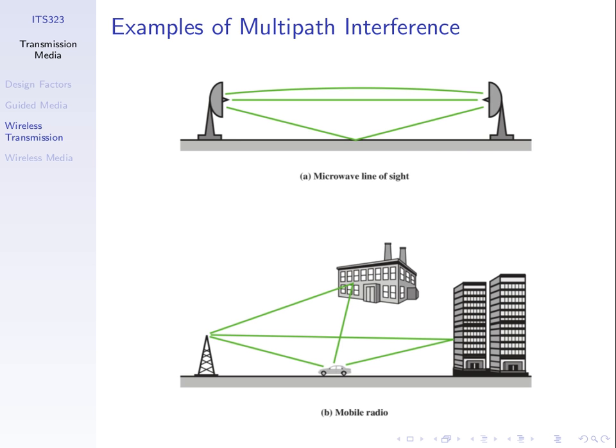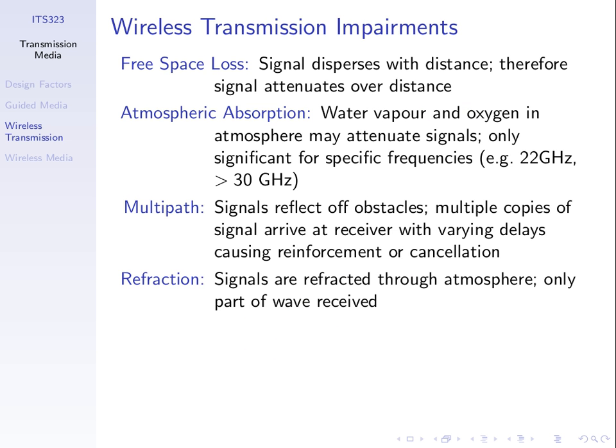There are different factors that impact how well the signal is received. We always lose signal strength — that's free space path loss. We may lose additional signal strength due to the atmosphere, we may have interference from signals bouncing off different obstacles (multipath interference), and refraction through the atmosphere is another factor.